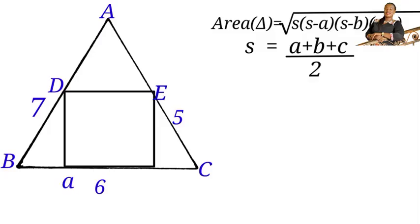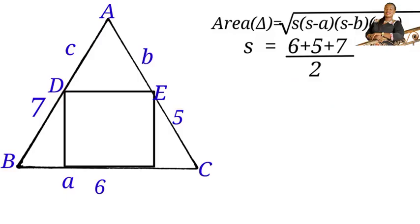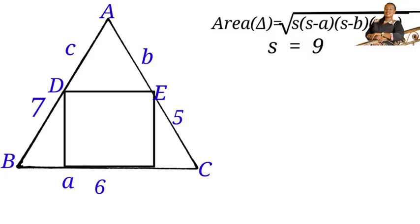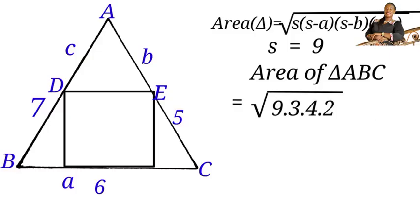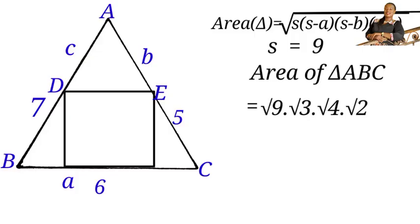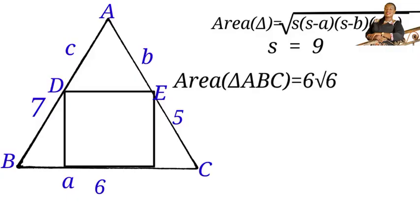Let us label the sides of the triangle: this is a, here is b, and here is c. In our question, a equals six, b equals five, and c equals seven. So s equals six plus five plus seven all over two, giving us eighteen over two, which equals nine. Substituting into Heron's formula, the area of triangle ABC equals the square root of nine times bracket nine minus six, times bracket nine minus five, times bracket nine minus seven, which equals root of nine times three times four times two, giving us six root six.